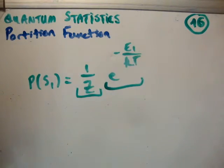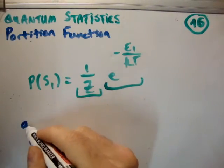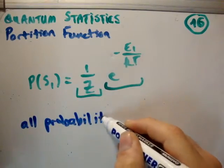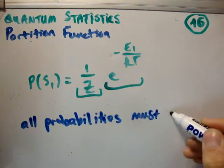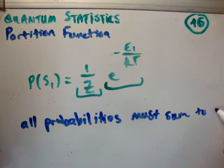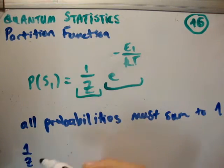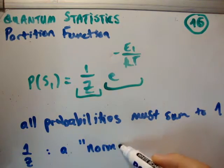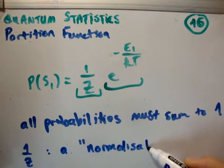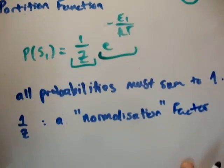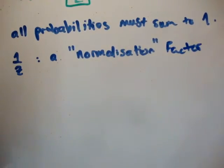So how do we calculate what the partition function is? Well, how we do it is we say all probabilities must sum to 1. So 1 over z seems to be a normalization factor.